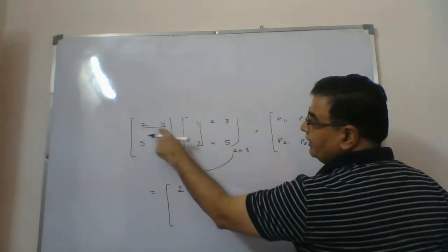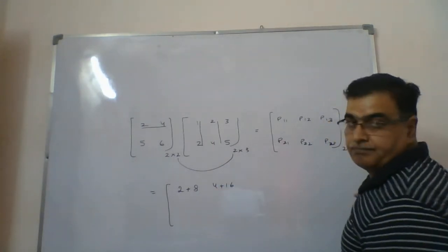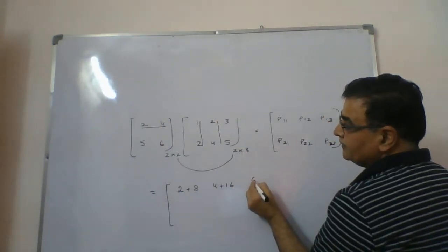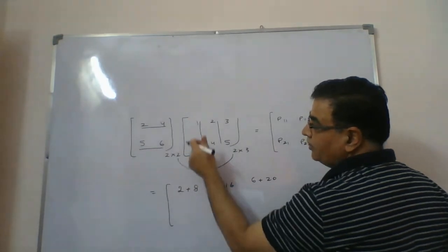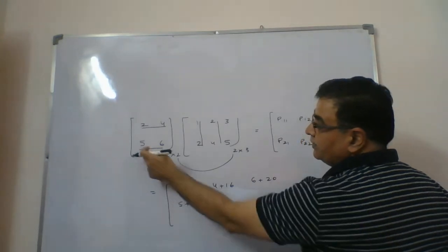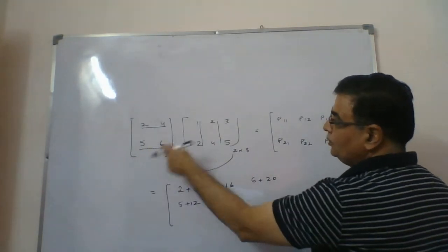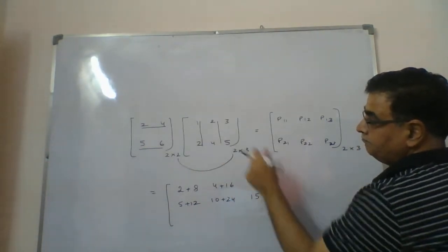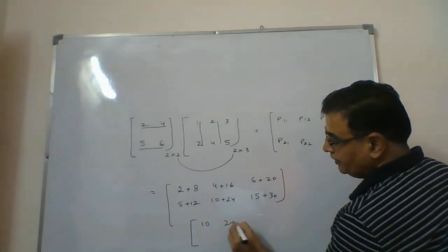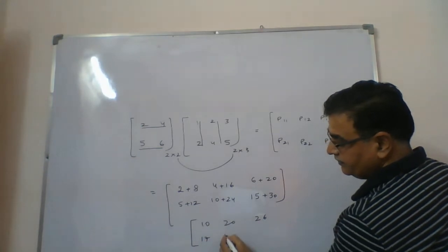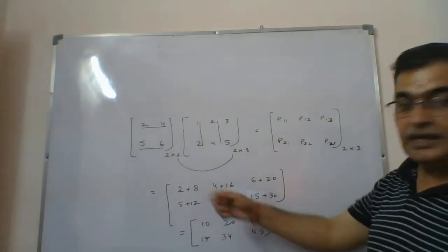For p12 (first row × second column): 2×2 + 4×4 = 4 + 16 = 20. For p13 (first row × third column): 2×3 + 4×5 = 6 + 20 = 26. For p21 (second row × first column): 5×1 + 6×2 = 5 + 12 = 17. For p22 (second row × second column): 5×2 + 6×4 = 10 + 24 = 34. For p23 (second row × third column): 5×3 + 6×5 = 15 + 30 = 45. So the final result matrix BA = [10, 20, 26; 17, 34, 45].